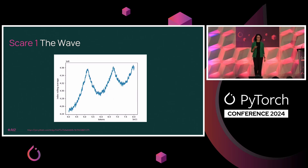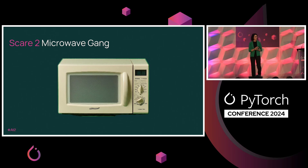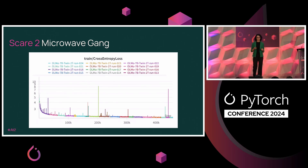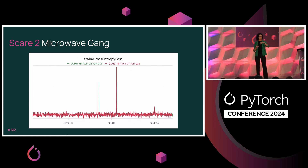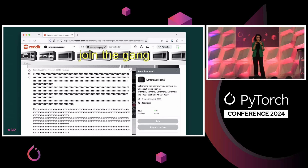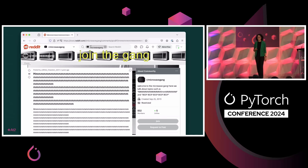Our second story: the microwave gang. When training a language model, sometimes you see fast spikes — the loss increases but then recovers back to normal. We thought this was related to something in our data. We discovered we had content from a subreddit called the microwave gang, where people type lots of M's followed by a beep. Somehow it passed our data filtering process, but it was causing loss spikes. We fixed this issue.